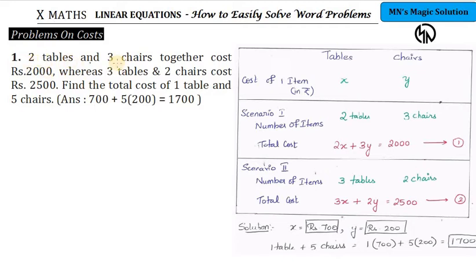In this cost problem, two tables and three chairs together cost Rs. 2000, whereas three tables and two chairs cost Rs. 2500. The first statement is scenario one, the second is scenario two. You have to find the cost of one table and one chair. The final question asks for the total cost of one table and five chairs.